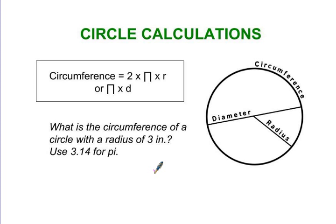To find the circumference of a circle, which is the same idea as the perimeter of the circle, it's different than finding the area. What is the circumference of a circle with a radius of 3 inches? Use 3.14 for pi.